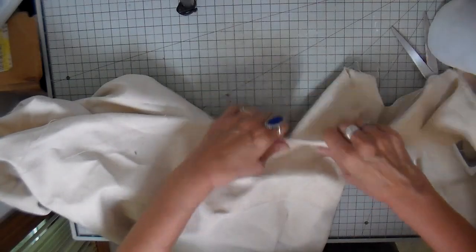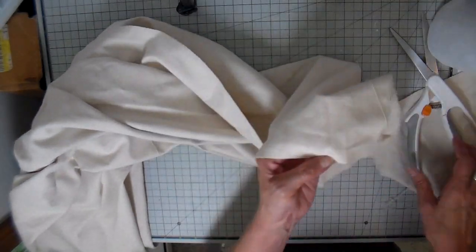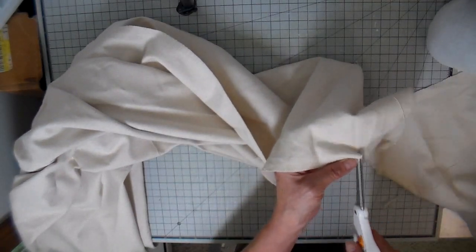This is for the strap and I'm measuring four inches by the whole length so each strap will be 30 inches. Then I'm also going to rip just a little two-inch strip. This is for the facing that goes around the top of the tote.